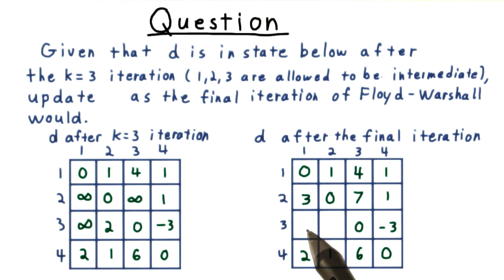3 to 1 is another path that's impossible without going through 4. But if I do go through 4, then going 3 to 4 costs negative 3, and going 4 to 1 costs 2, for a total of negative 1.